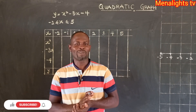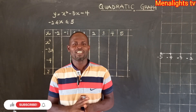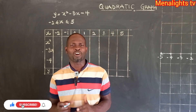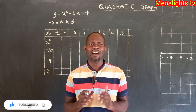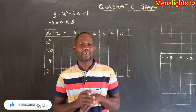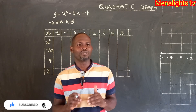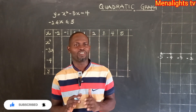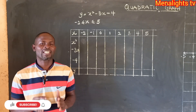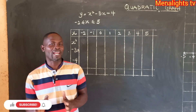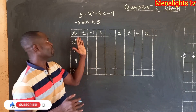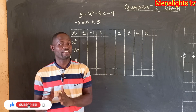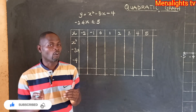Welcome to Manalize TV. Our lesson is going to be based on how to draw a quadratic graph. We have a table of values which we are going to fill and then use it to draw the graph. To get the values of y, we have the relation y is equal to x squared minus 3x minus 4.